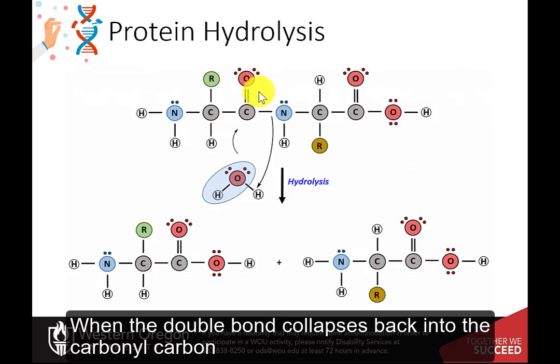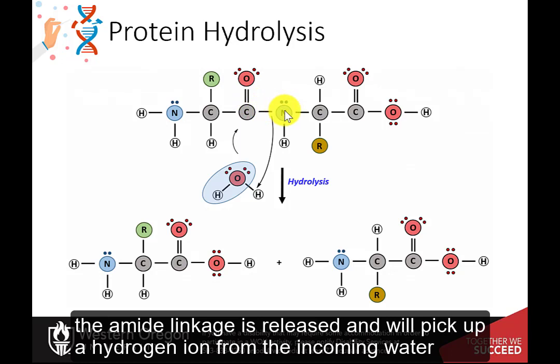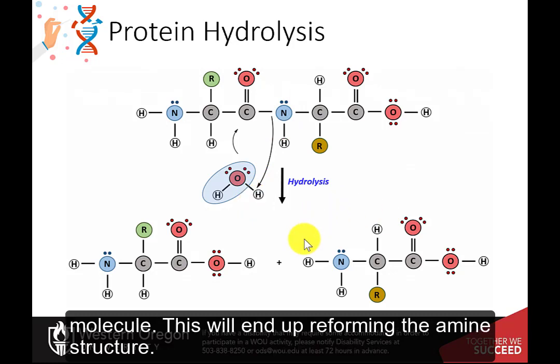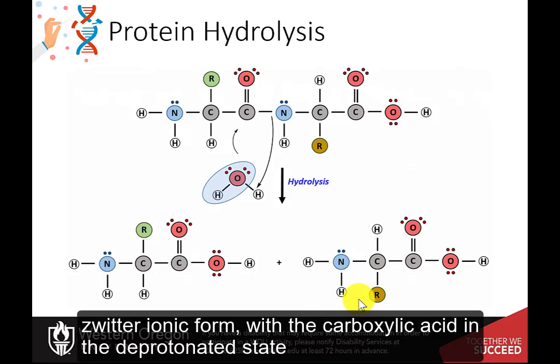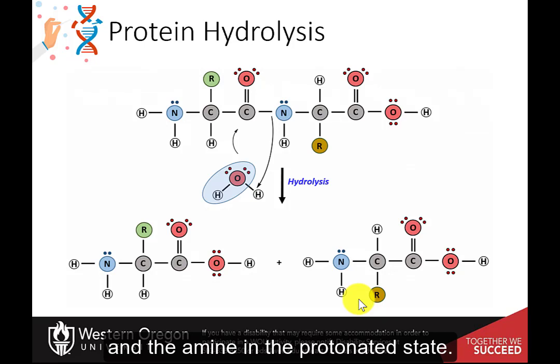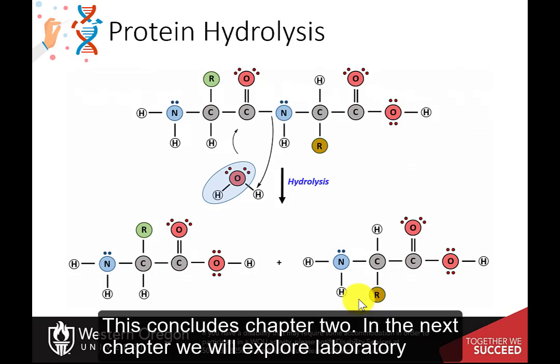When the double bond collapses back into the carbonyl carbon, the amide linkage is released and will pick up a hydrogen ion from the incoming water molecule. This will end up reforming the amine structure. Note that under standard biological pH, the hydrolyzed amino acids will take on their zwitterionic form with the carboxylic acid in the deprotonated state and the amine in the protonated state. This concludes Chapter 2.